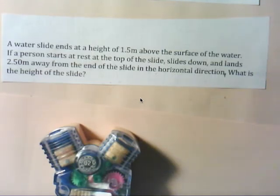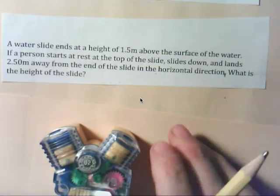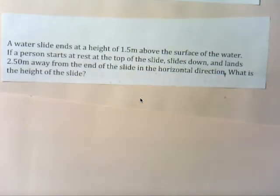A water slide ends at a height of 1.5 meters above the surface of the water. If a person starts at rest at the top of the slide, slides down, and lands 2.5 meters away from the end of the slide in the horizontal direction, what is the height of the slide?